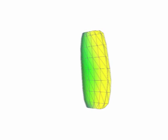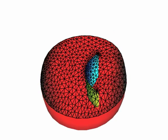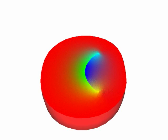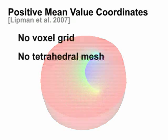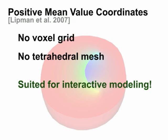Diffusion surfaces are defined as standard triangular surface meshes, where each mesh vertex has colors on both front and back sides. When the user cuts the model, a cross-sectional mesh is generated, and consistent volumetric colors are computed on the cross-section. We employ positive mean value coordinates to achieve this, which does not require any voxel grids or tetrahedral meshes, and is well-suited for interactive modeling.